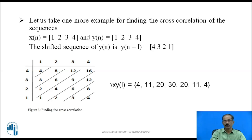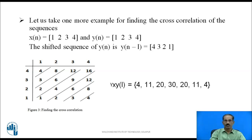Let us take one more example to find the cross-correlation. Interestingly, when the same sequence is used for both x[n] and y[n], the result is the same as the autocorrelation sequence. Here, x[n] = {1, 2, 3, 4} and y[n] = {1, 2, 3, 4}. The time-reversed shifted sequence y[n - l] is {4, 3, 2, 1}.